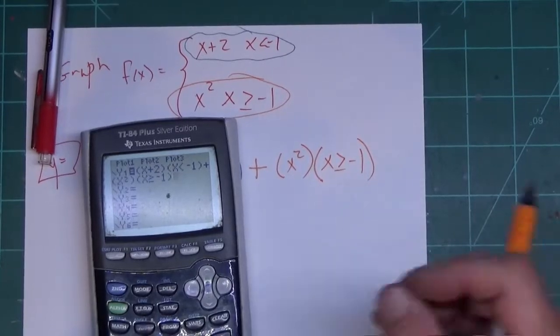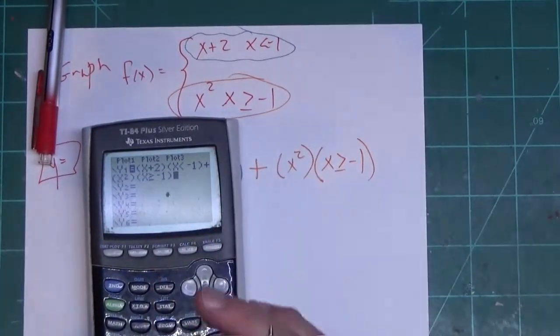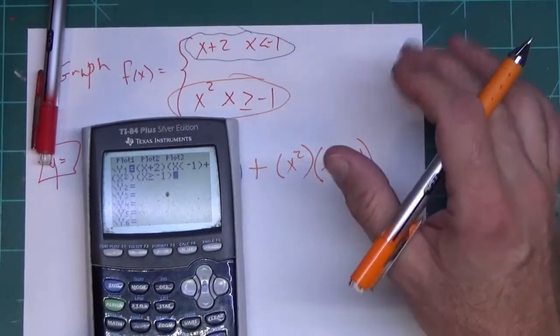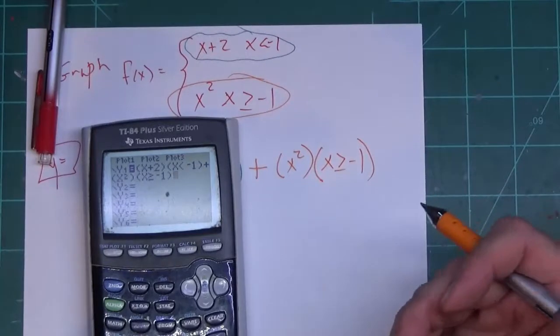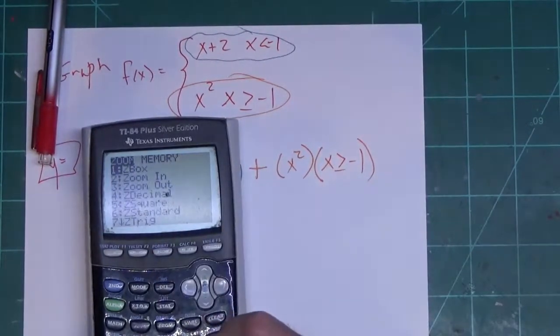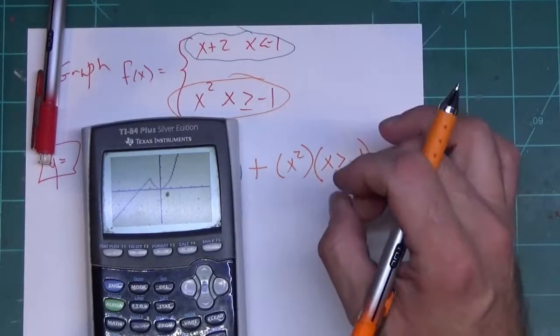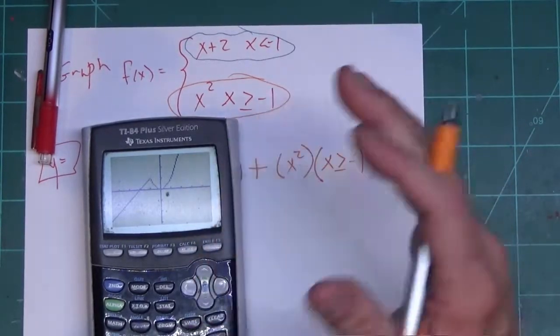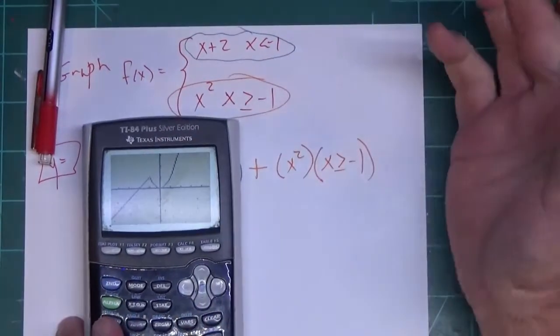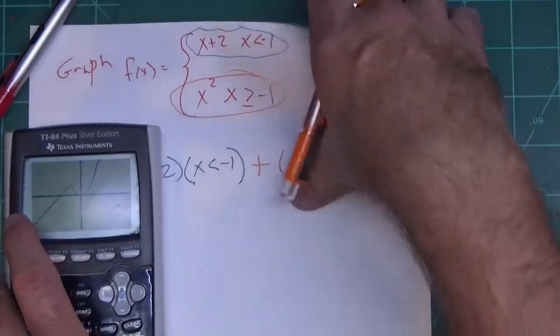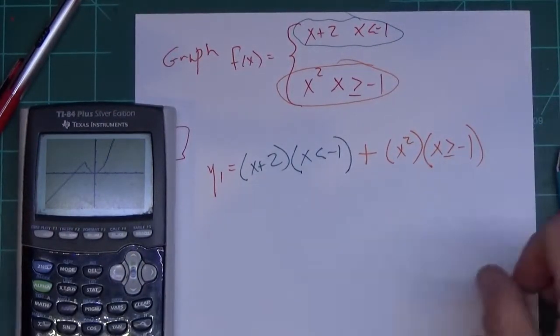Now what I can do from here, I'm going to use a kind of a smaller window. I'm not going to use Zoom Standard. Remember, Zoom Standard does negative 10 to 10. Zoom Decimal does negative 4 to 4, so it's a smaller window. And you can see it graphed this just fine. And it graphed the piecewise, and it graphed what I expected it to graph.